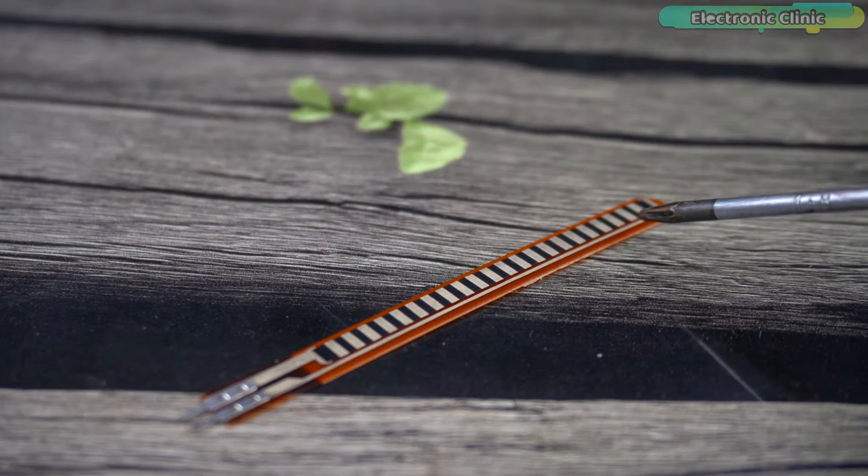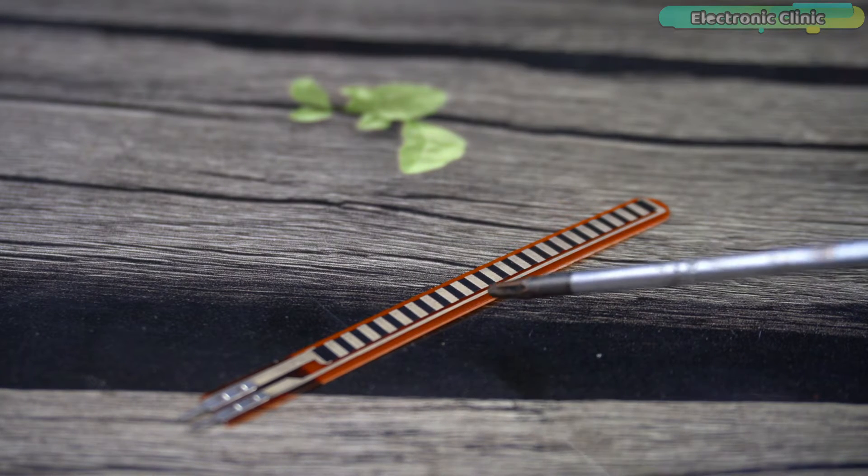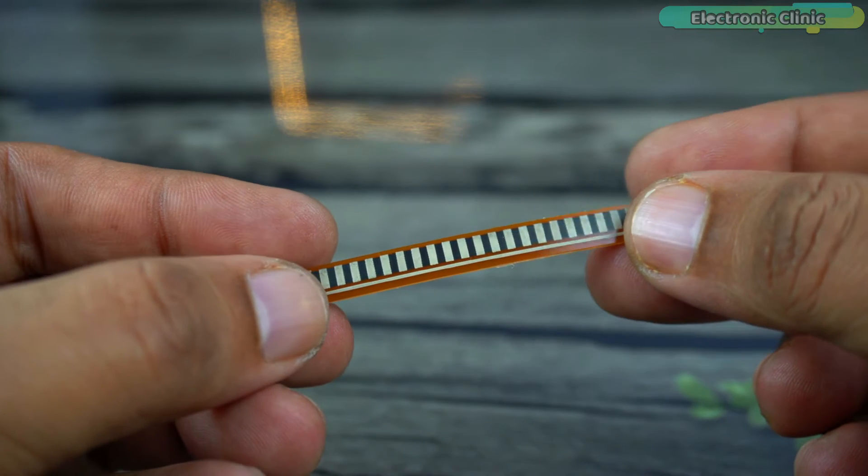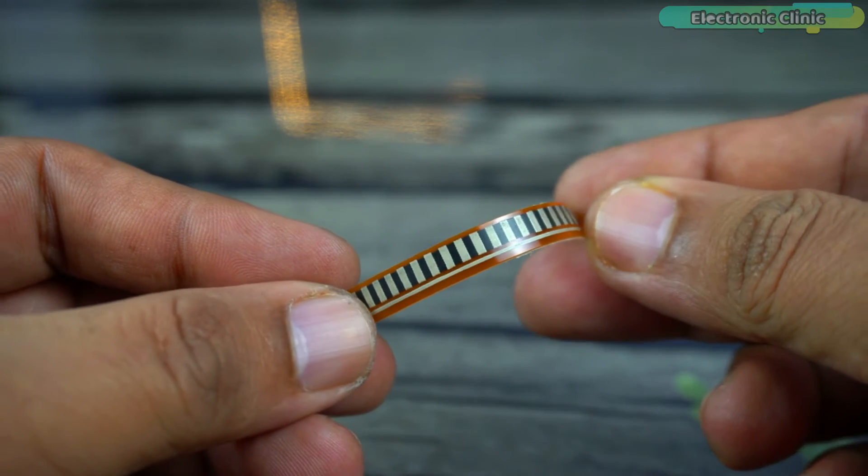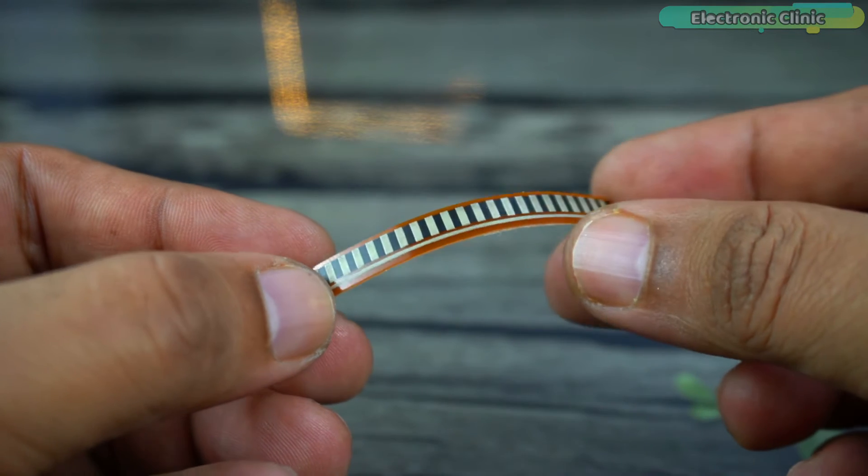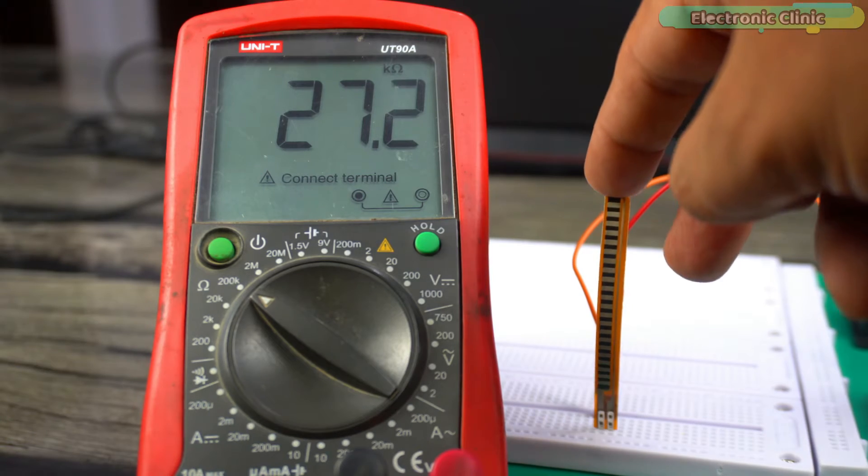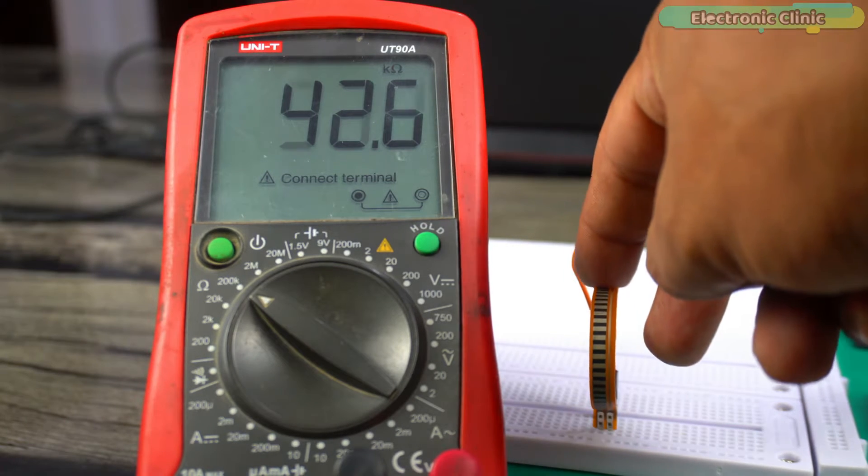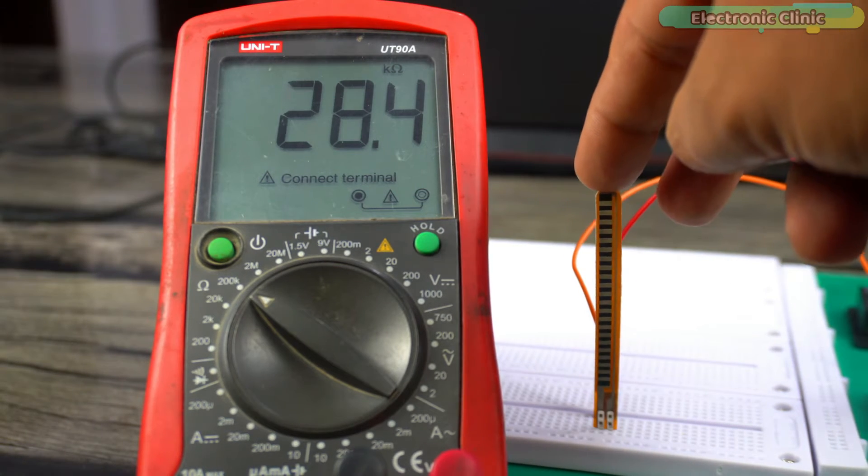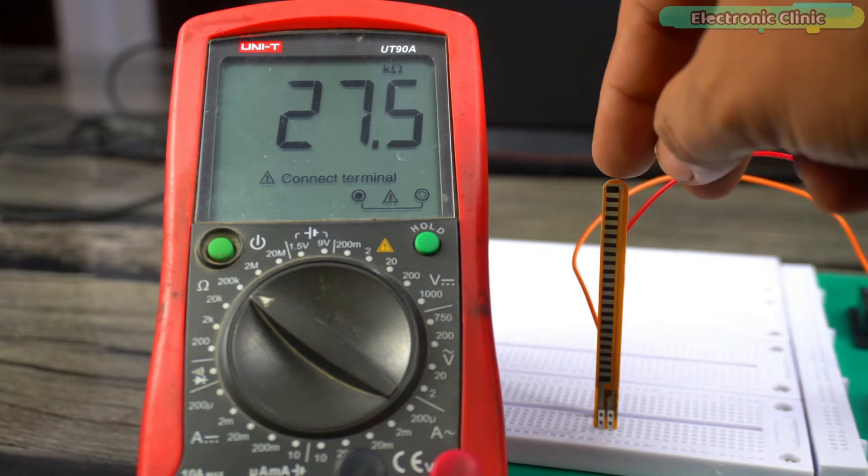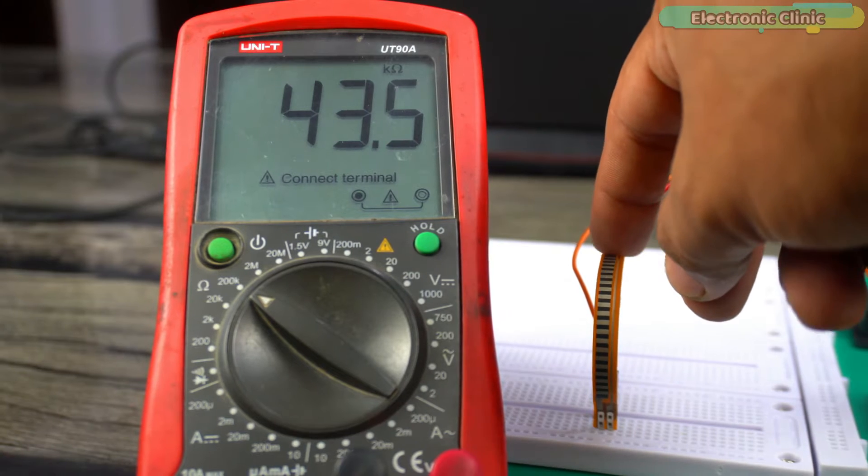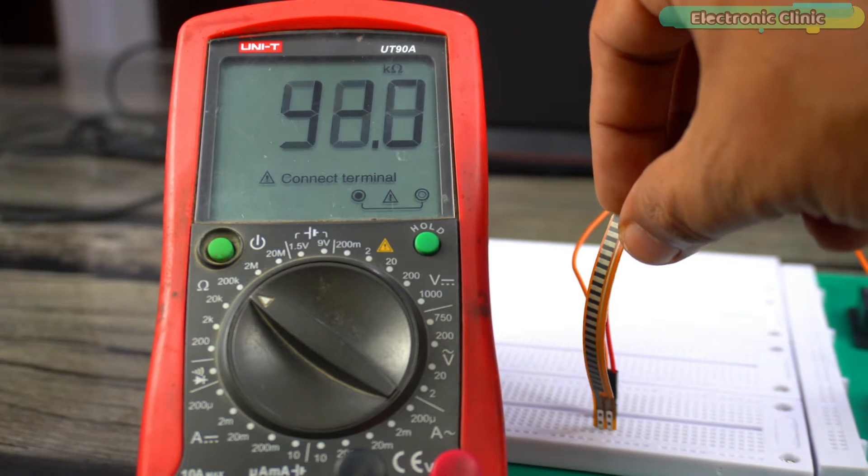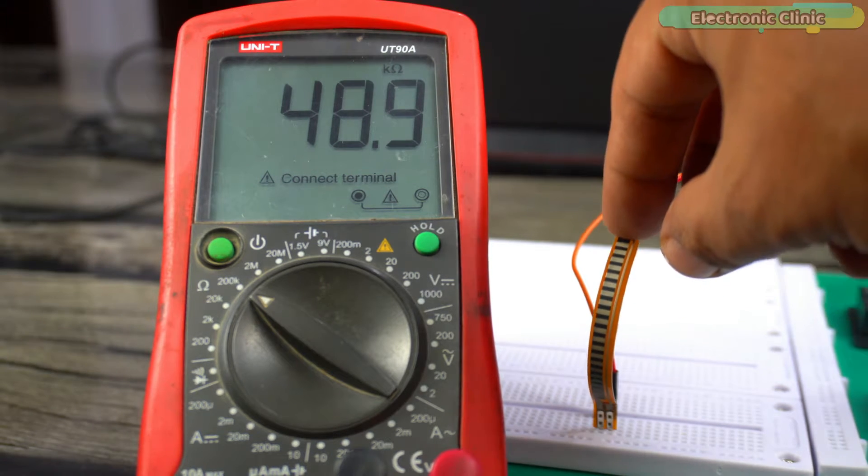Flex sensors typically consist of a flexible material with conductive material traces or elements running along their length. When the sensor is bent or flexed, the resistance of these conductive elements changes, and this change in resistance is used to determine the degree of bending or flexing. The bend sensor is usually stuck to the surface whose bend is to be monitored. As the surface is bent, the resistance of the bend sensor varies. So we can say that the resistance of the bend sensor is directly proportional to the amount of bend.